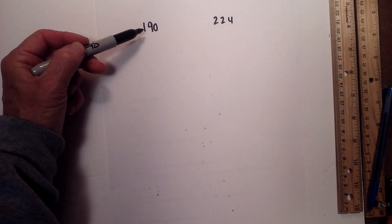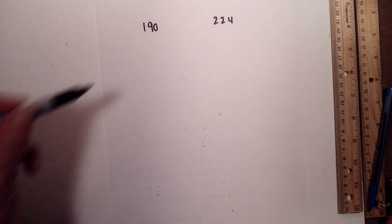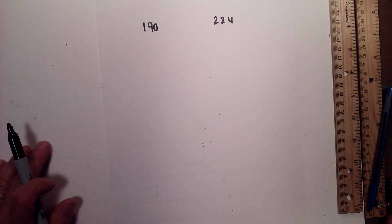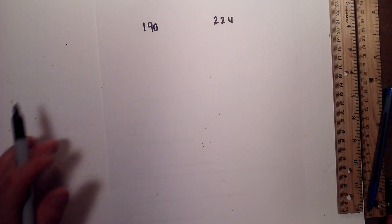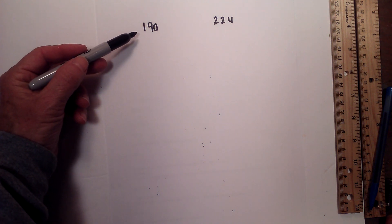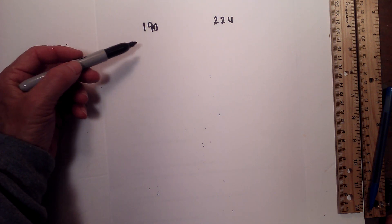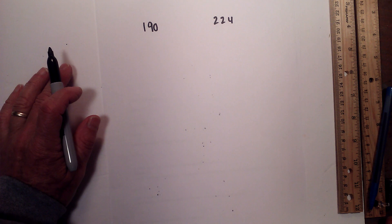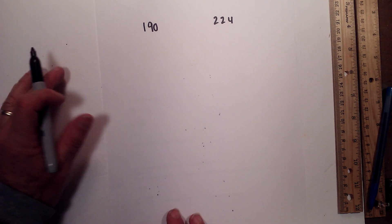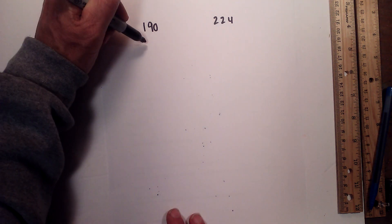Welcome to Math and Science. Today we'll find the prime factorization of 190 and 224. Prime factorization is finding which prime numbers multiply together to equal the original number. I like to use a factor tree, so let's get started.